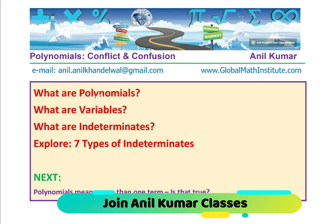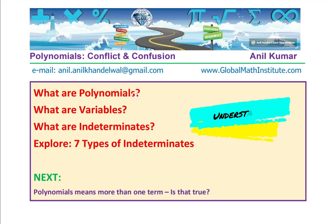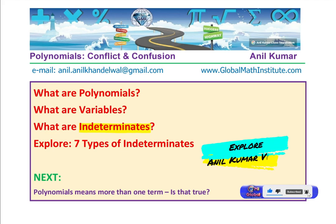Let us talk about the major contents. First, we will address what are polynomials. Then, what are variables and what are indeterminates. Indeterminates something which we cannot find exact value of. There are seven types of indeterminates which we will also see. I have added this only for my students to understand that yes, there are some indeterminates which are not variables.